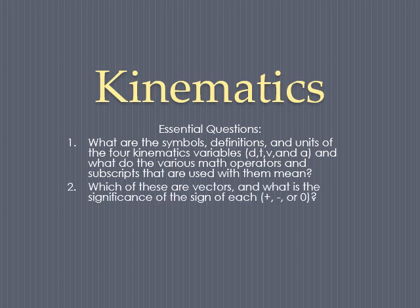The second question is, which of these are vectors, and what is the significance of the sign of each value? Vector is a number that has a value and also a direction, so left, right, north, x-axis, that kind of thing, and the opposite of vector, the alternate to vector is a scalar, which is a number that's just a value without any kind of direction.